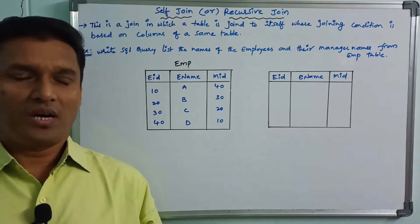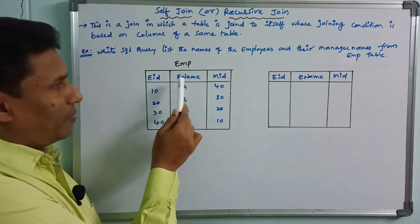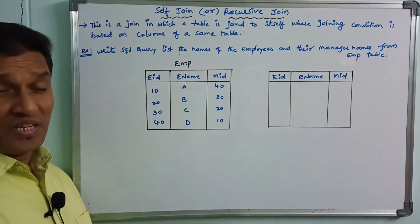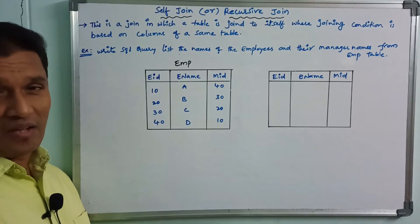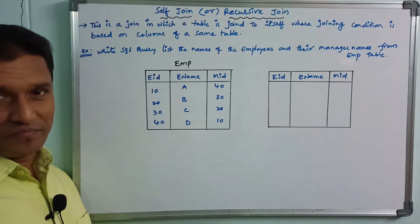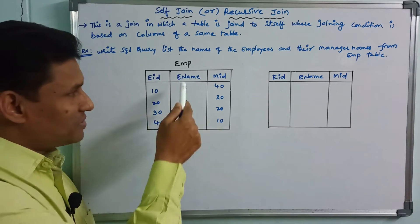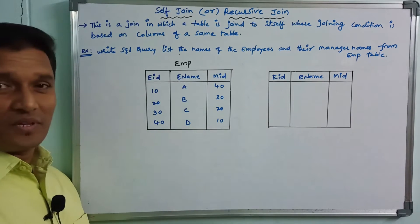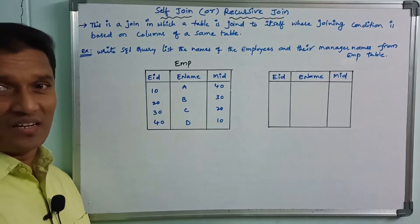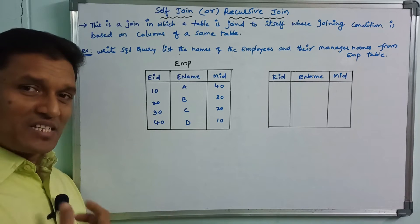For example, the Employee table has columns: Employee ID, Employee Name, and Manager ID — three columns in total. The question is: Display Employee Names and their Manager Names. Employee Name is present, but only Manager ID is there, not Manager Name. So in this situation, how do we retrieve the manager name?